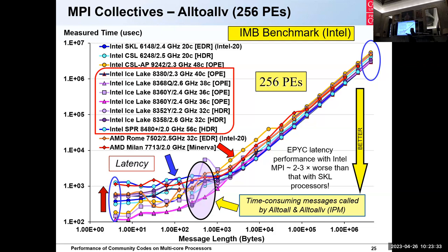The blue bars represent Sapphire Rapids, and fast-forwarding through all the codes: Sapphire Rapids does a really good job relatively speaking, except for CASTEP. And I think the MPI collective issue is the reason why — the Alltoallv performance on Sapphire Rapids is poor for CASTEP. I have to say I don't fully understand why it is as poor as it is.